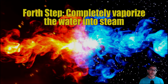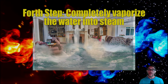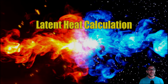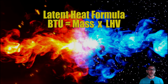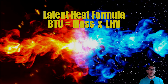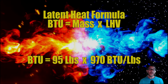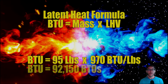Fourth step: let's take this 95 pounds of water and vaporize it into steam. This is a latent heat calculation. The latent heat of vaporization is 970 BTUs per pound. Plugging into the formula — BTUs equals mass times latent heat of vaporization, or 95 pounds times 970 BTUs per pound — to change 95 pounds of water into steam will consume 92,150 BTUs. We're going to write that down for the very end.